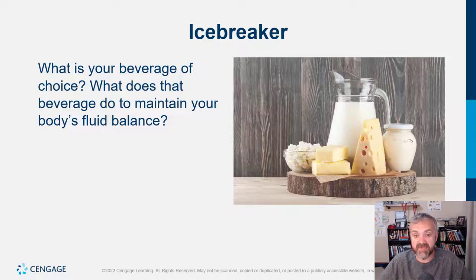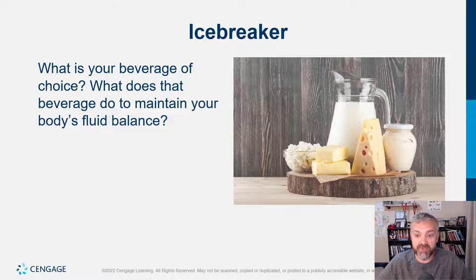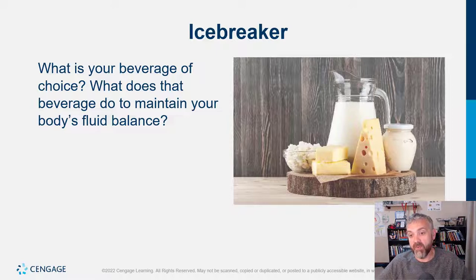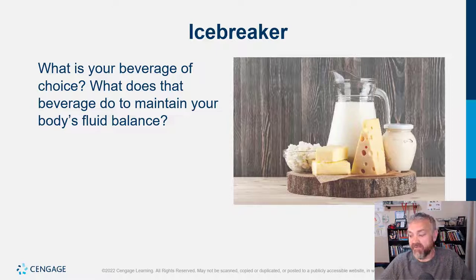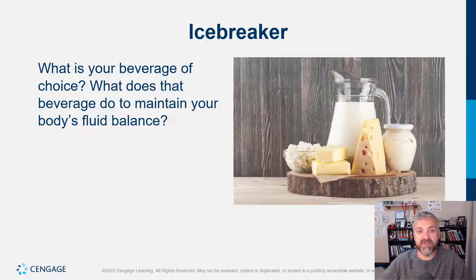One thing about coffee is it has a bad reputation as being a diuretic, and it is, but it still leads to a net gain in fluid balance. If you drink eight ounces of coffee, even with a relatively powerful diuretic effect, you're still getting a net gain of maybe four ounces of water. The Mayo Clinic and WebMD note that coffee is a diuretic when you first start consuming it, but your body adapts. Once you're adapted, it's really not much of a diuretic. Water is still the majority of what anyone should drink.